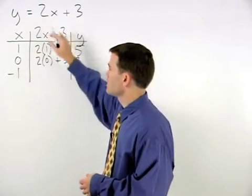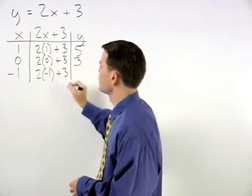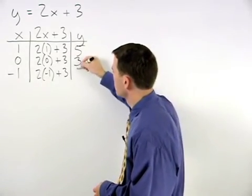Plugging a negative 1 into the equation for x, we have 2 times negative 1 plus 3, which is negative 2 plus 3, or 1.